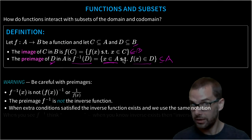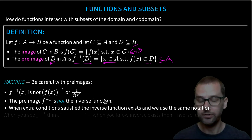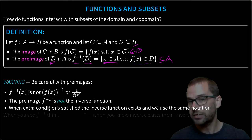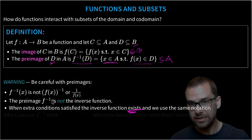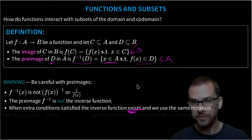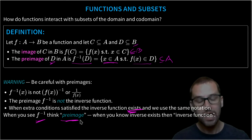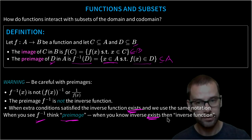The pre-image, at the stage we're at now, is not the inverse function. It's definitely related to it, but it's not the inverse function. We need a bunch of extra conditions satisfied for the inverse function to actually exist. When it does exist, we unfortunately use that same notation, F inverse, to mean the inverse function. So when you see this notation, F inverse, you should think pre-image, unless you know the inverse function exists. As a first step, always, when you see F inverse, think pre-image.